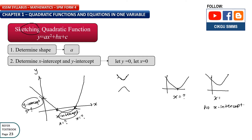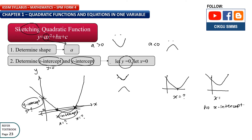There are 3 things you need to know: first is the shape, then the y-intercept, then the x-intercept. To determine the shape, we use the value of A. If A is positive, the shape is a smiley face. If A is negative, it's a sad face. To find the x-intercept, let y equal to 0. To find the y-intercept, let x equal to 0.